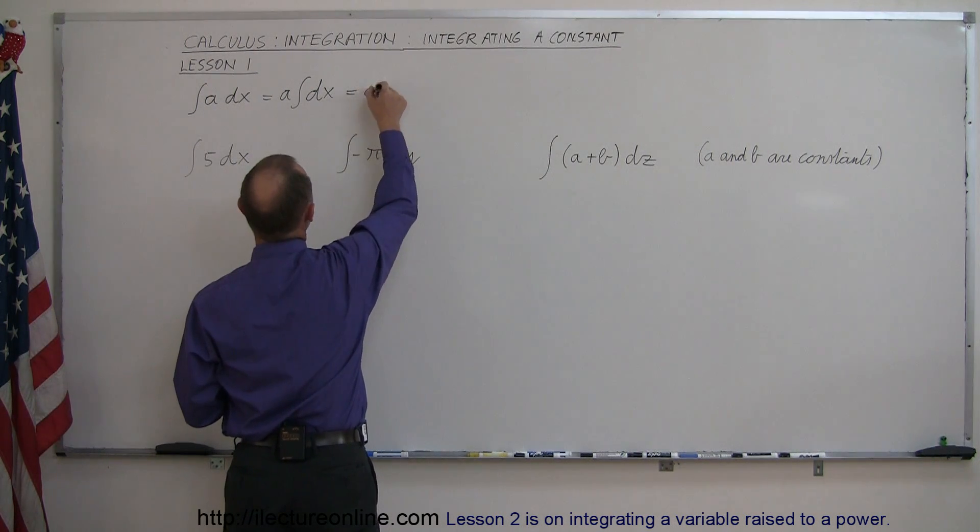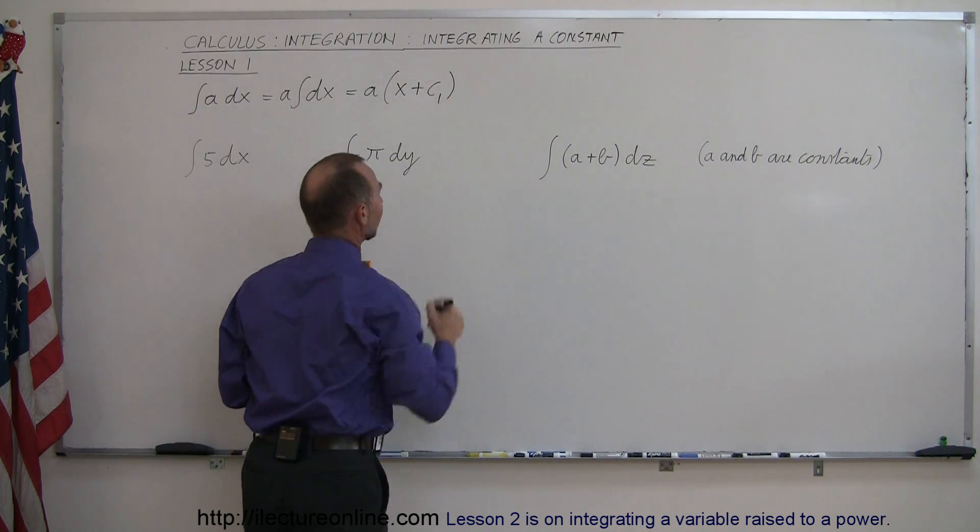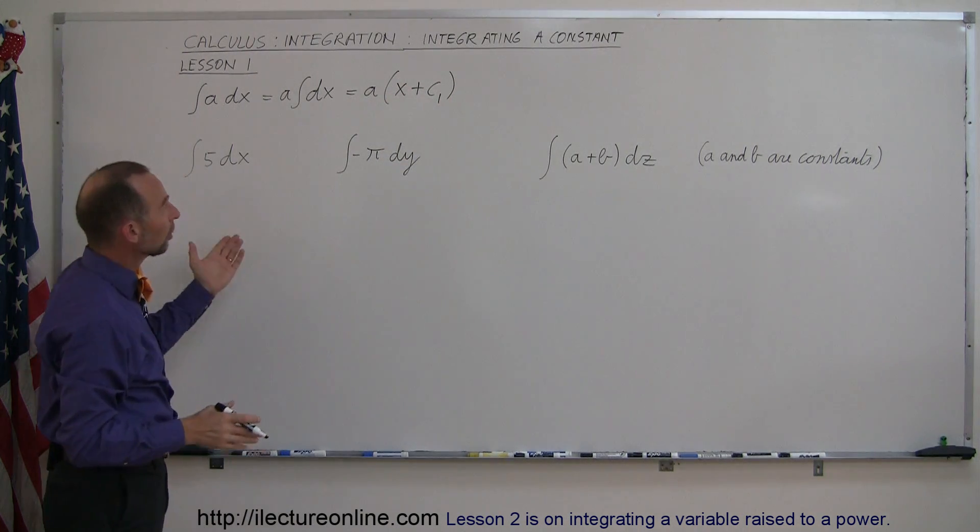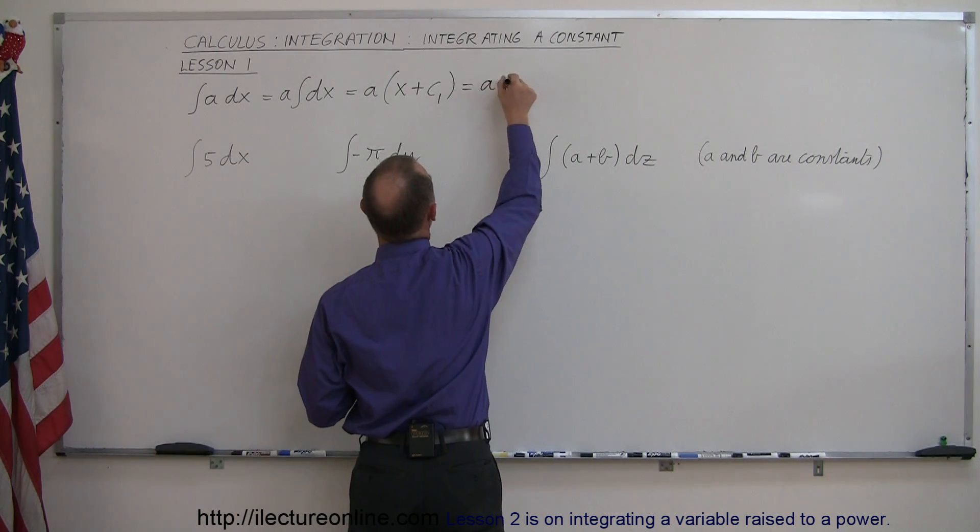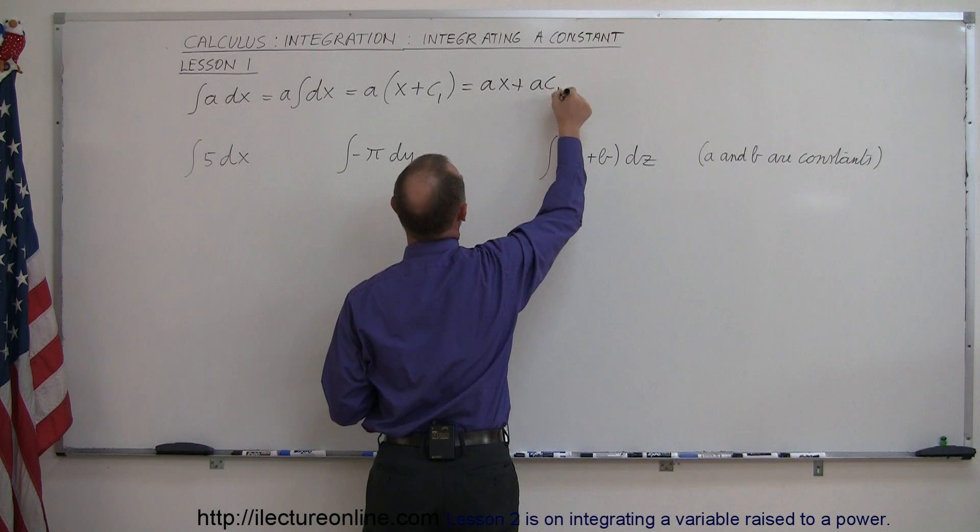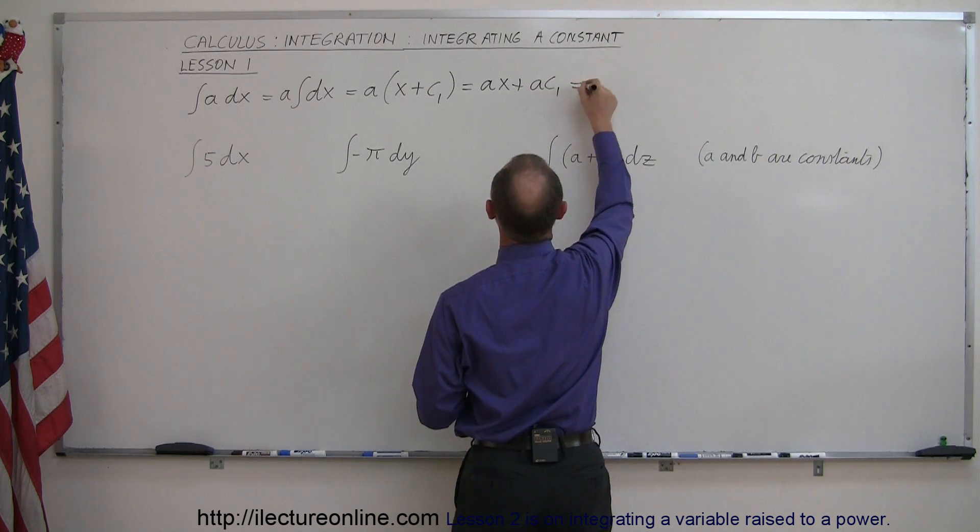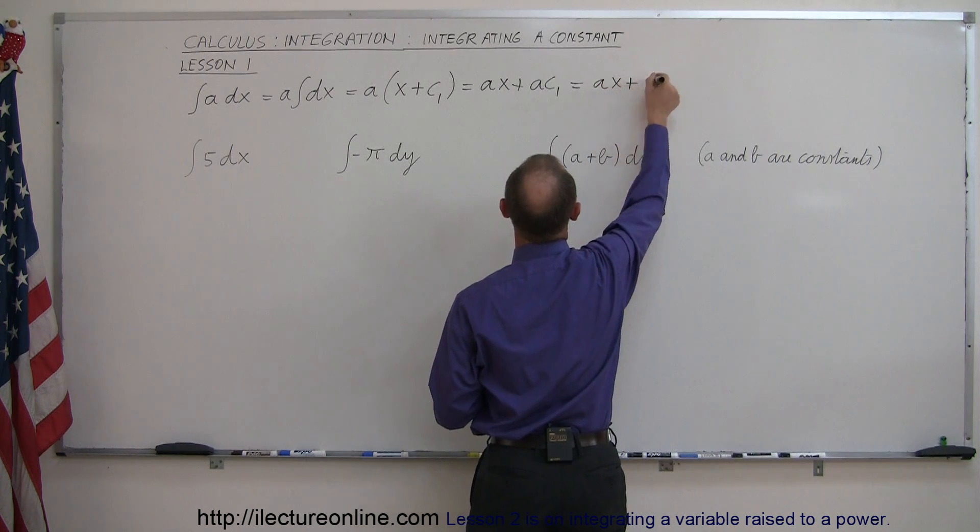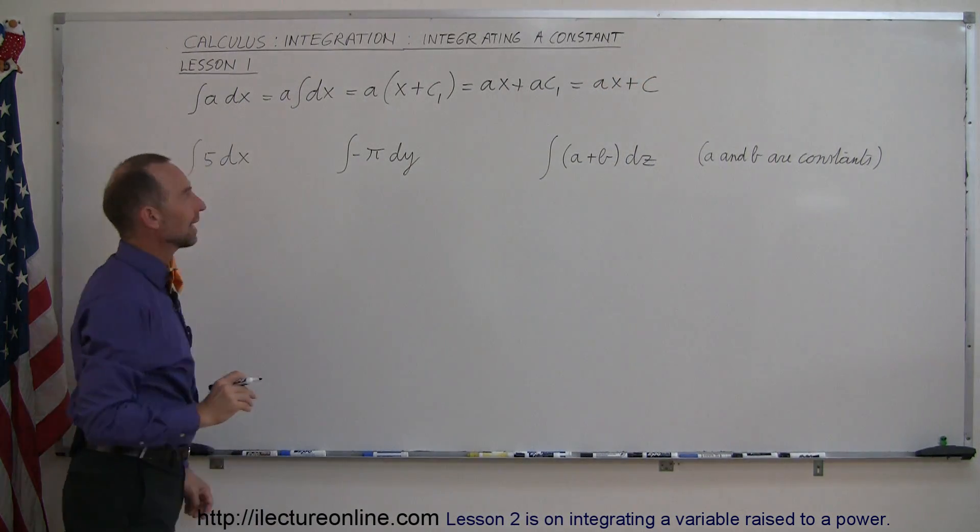So this is equal to a times x plus some constant of integration, I'll call that c1. When you multiply a times x and a times c1, this gives you ax plus ac1. You can combine these two since both are constants. You can write this as ax plus c. And that's the integral form of the constant a times dx.